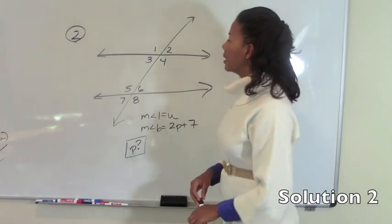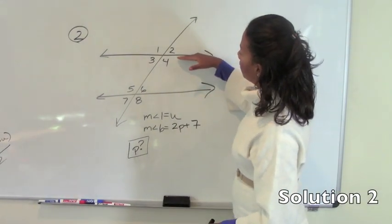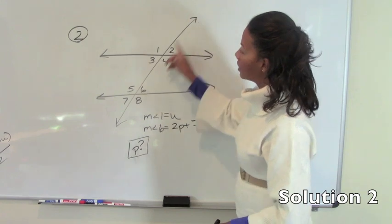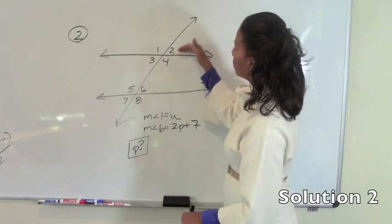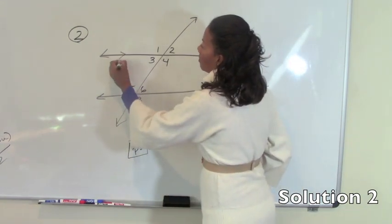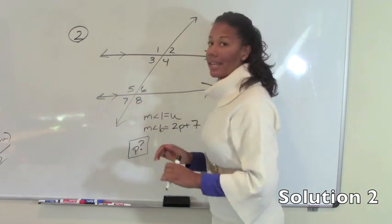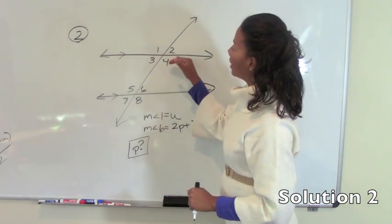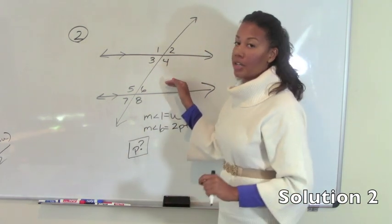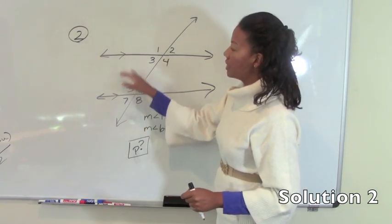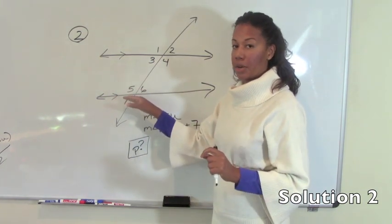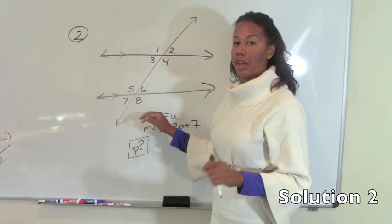Number 2 gives us two parallel lines cut by a transversal. We know that our two lines are parallel because we have a symbol indicating that they are parallel. If the lines simply look parallel but we're not told verbally or given some type of symbol that indicates that they are indeed parallel, then we cannot assume that they are parallel.